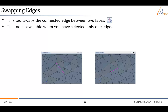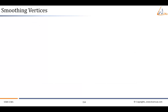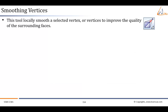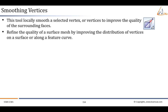The next tool is 'Smoothing Vertices'. This tool locally smooths a selected vertex or vertices to improve the quality of the surrounding faces. Use this tool if you want to refine the quality of a surface mesh by improving the distribution of vertices on a surface or along a feature curve. The 'Smooth Selected or Attached Vertices' tool becomes available when you select at least one vertex, edge, or face.